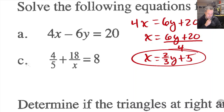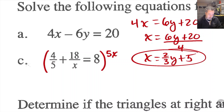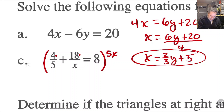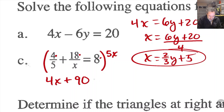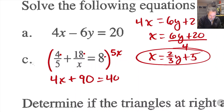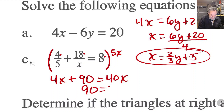For part B, I have a fraction plus another term, so I'm going to multiply both sides of the equation by 5x — a brilliant move, since I never want to solve with the variable in the denominator. Multiplying everything by 5x: 5x divided by 5 gives x, so this becomes 4x plus 5 times 18, which is 90, equals 40x. 8 times 5 is 40.